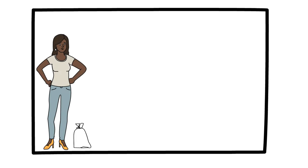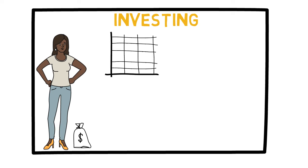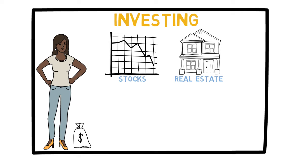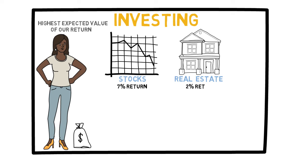Suppose you have a couple of hundred dollars left over every month and you decide to invest that money. Assume you have two options: stocks or real estate, and you want to know which is the better choice. Each option has uncertainty and randomness, so no answer would be absolute, but we can increase our chances of success by looking at the highest expected value of our return. Looking at the past hundred years or so, stocks have had better returns on average than real estate. Let's say over a period of time stocks have had a seven percent return adjusted for inflation and real estate only two percent.